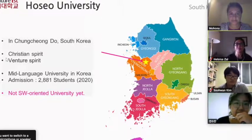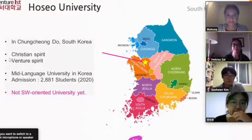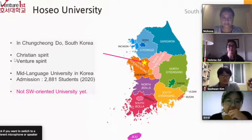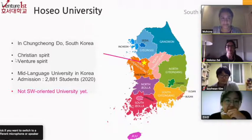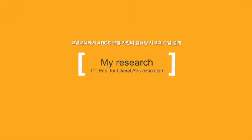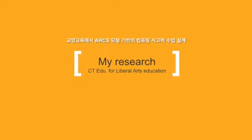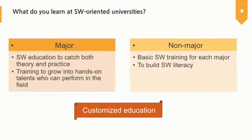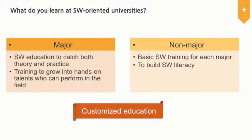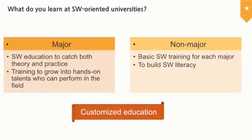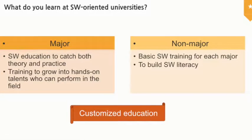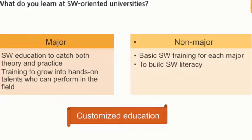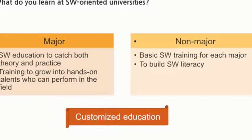If a university becomes software-oriented, students can benefit in specific ways. For major students, they can learn software education covering both theory and practice, and they can train to grow into hands-on talent who can perform in the field. If the student is not a major, they can learn basic software training for each major and build software literacy, with customized education.